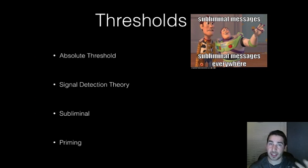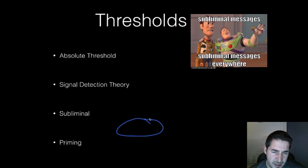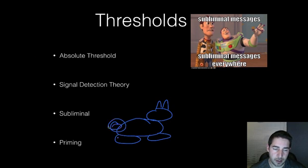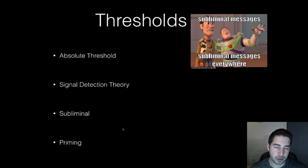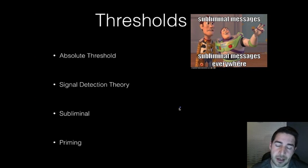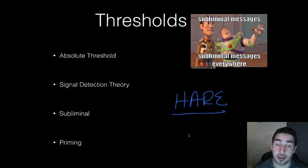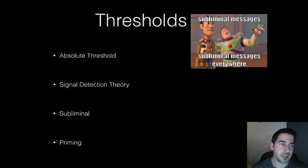Priming gets your brain thinking in a certain direction. Another example: if I show you a picture of a rabbit — there's a little tail, a rabbit nose — and then take it off the screen and ask you to spell 'hair,' people who saw the rabbit are going to spell it H-A-R-E, because that's how you spell rabbit hair. They were primed for it.